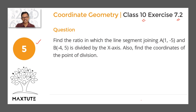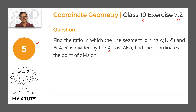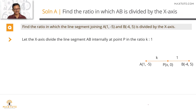Find the ratio in which the line segment joining point A, whose coordinates are (1, -5), and point B, whose coordinates are (-4, 5), is divided by the x-axis. Also find the coordinates of the point of division.